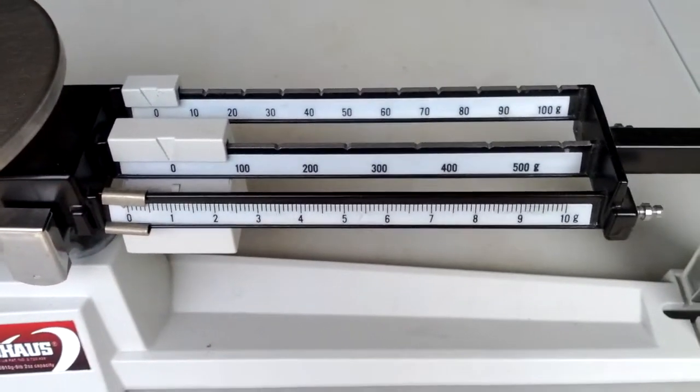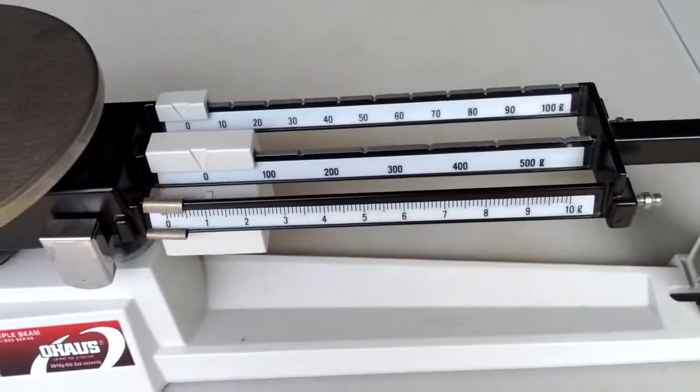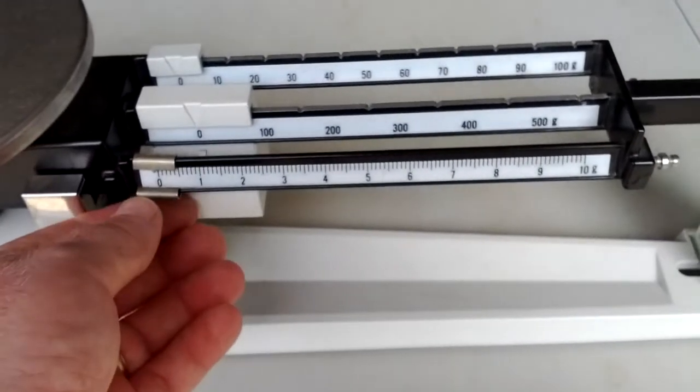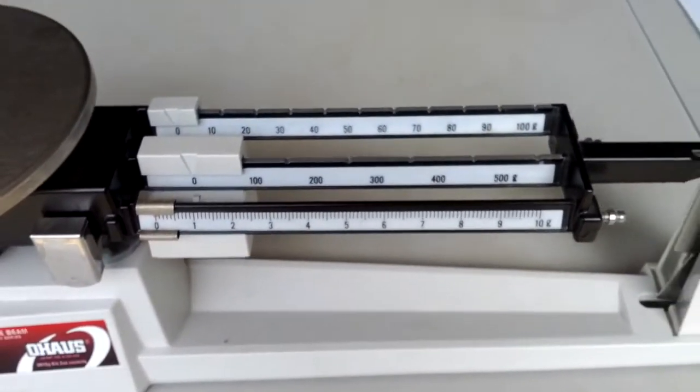And then the back one is in tens. And again, it's got little grooves. You have to make sure it's right on one of the numbers in the groove. These are called riders, not sliders, even though they slide, because they ride along the beams.